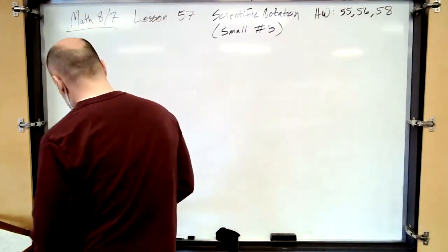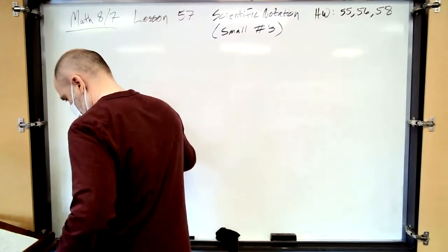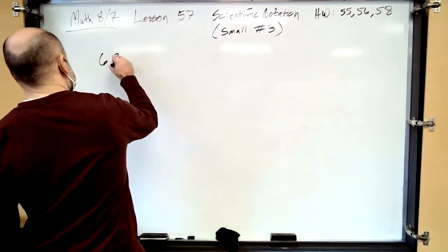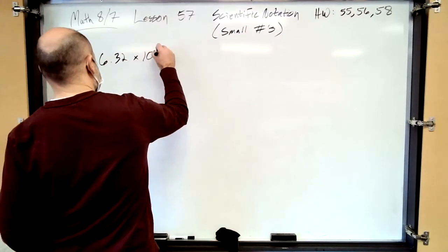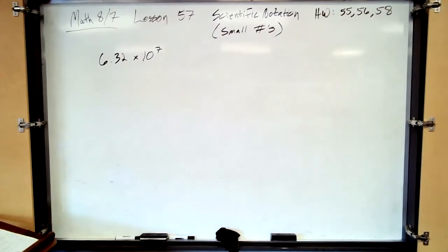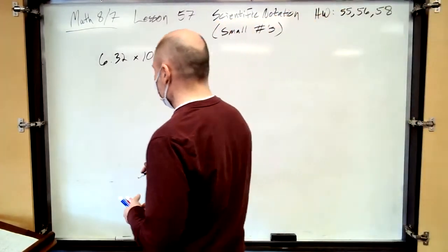Let's do some review. Remember when we had a number like this? 6.32 times 10 to the 7th. Well, how do I write this in standard notation? Remember? Move the decimal over 7 places. Which way?